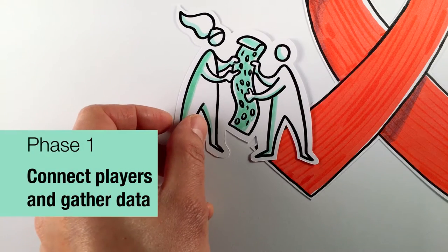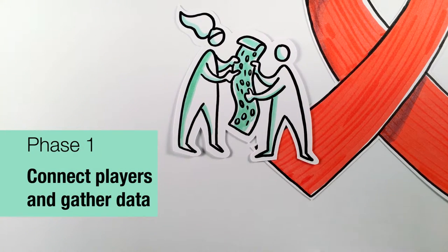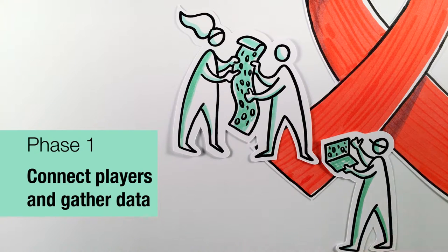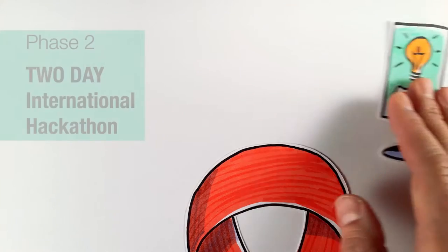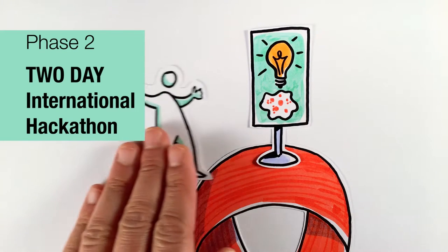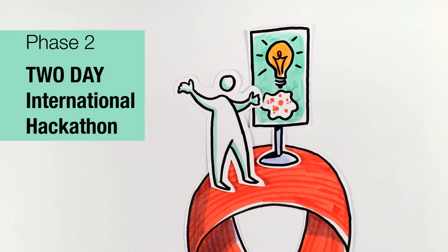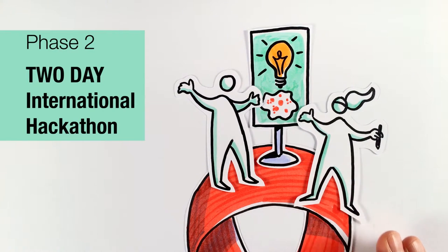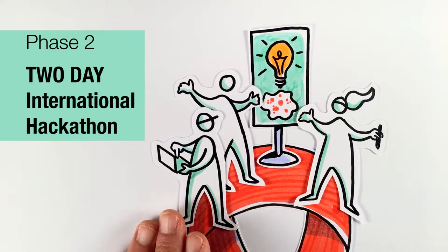Phase 1: Connect players and gather data. By connecting to active players, we plan to unlock access to valuable data and gain multiple views to the problem. Phase 2: A two-day international hackathon. Using the expertise and creativity of the participants, we plan to gain valuable insights into the spread of HIV drug resistance and develop a method to identify hotspots of HIV drug resistance.